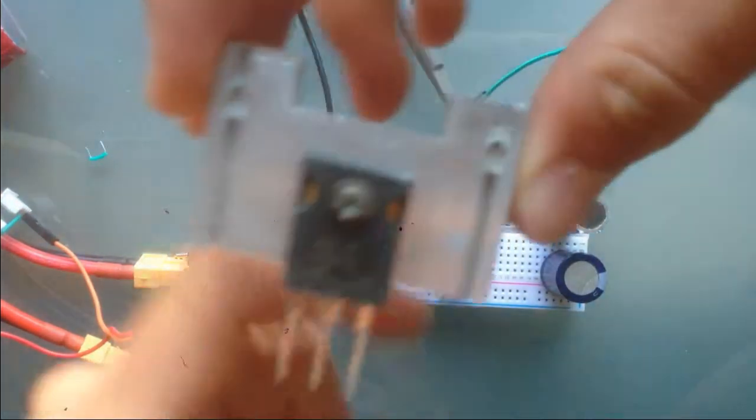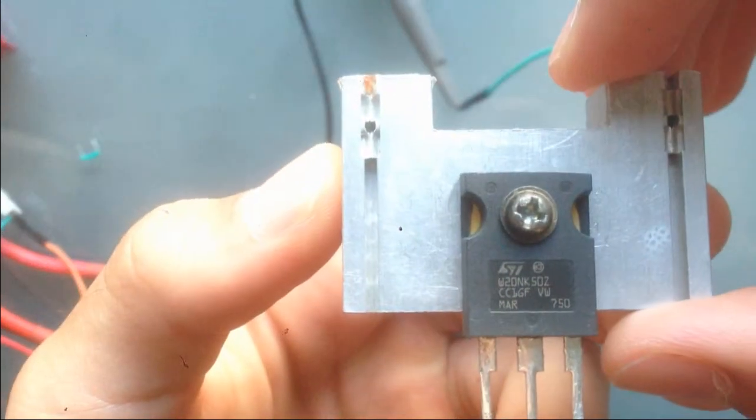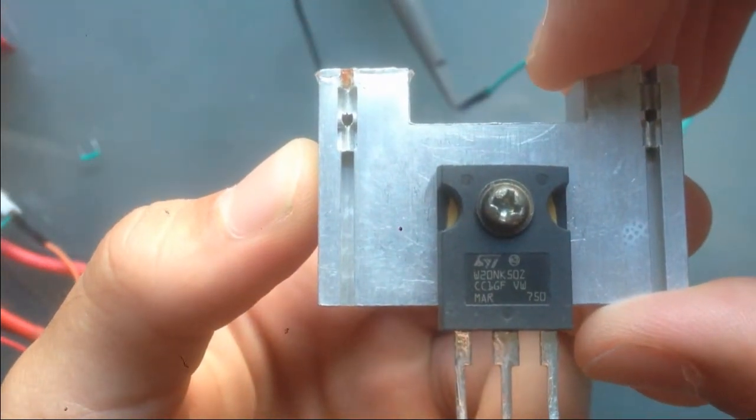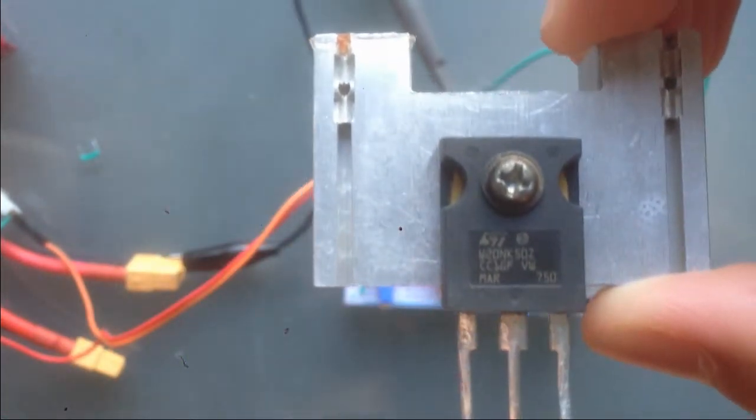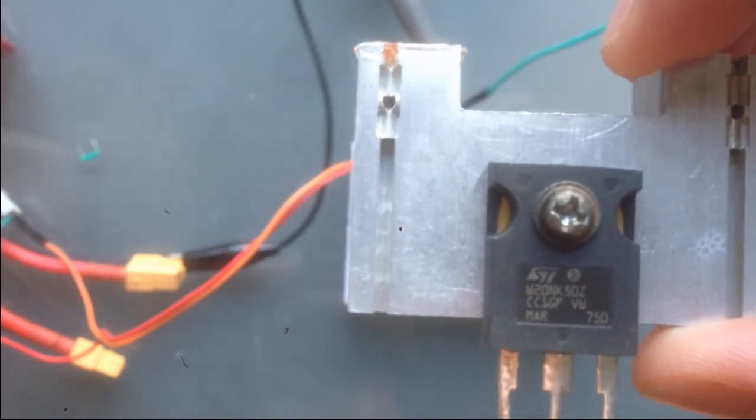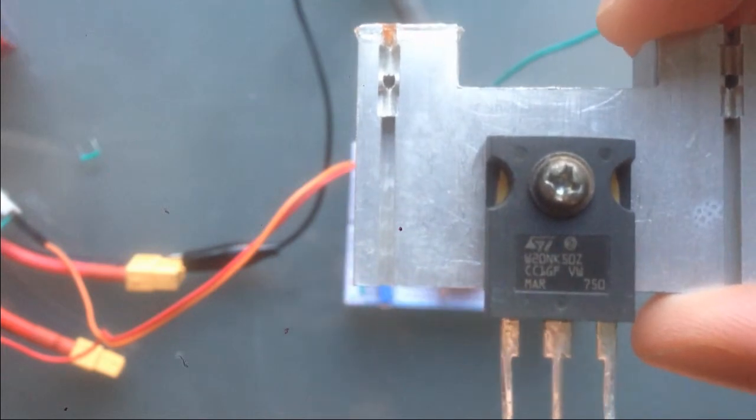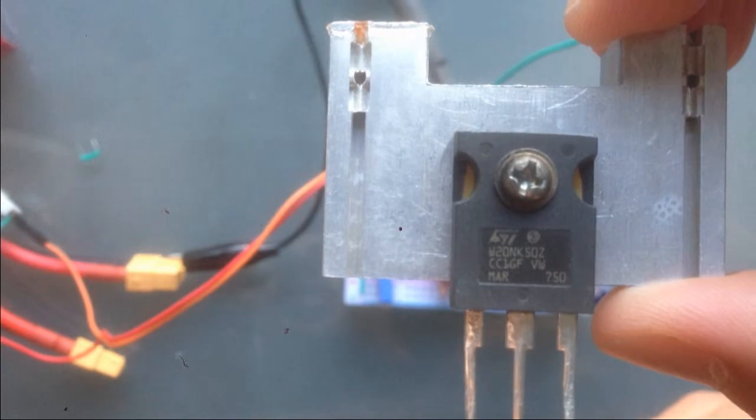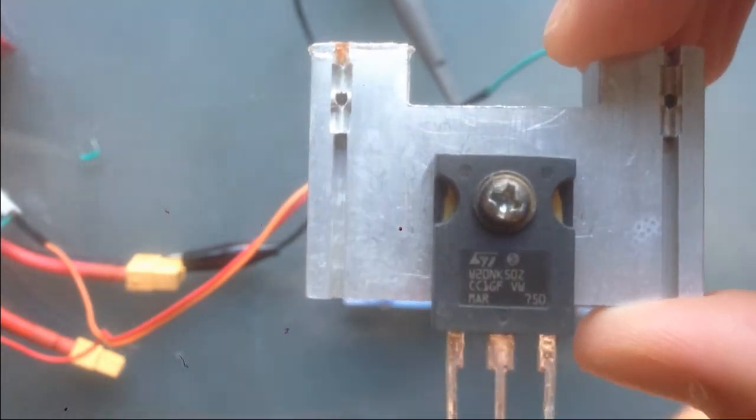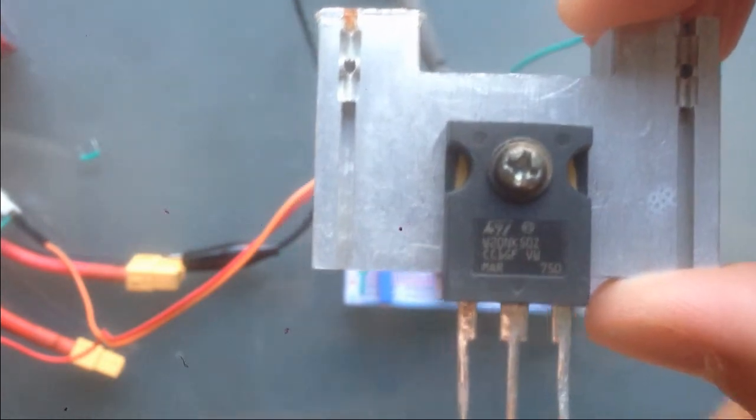And as for the transistor itself, I'm using this W20NK50Z transistor. So also N channel MOSFET. It can actually take a bit more current and a bit more voltage than the 2SK1058 but again, pretty much any MOSFET will do for this along with pretty much any variation on the components provided within this diagram. As a MOSFET is a voltage controlled device and they are pretty robust.